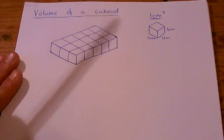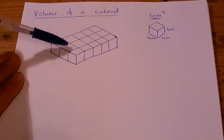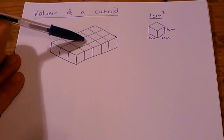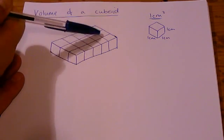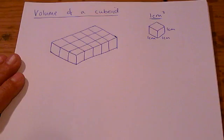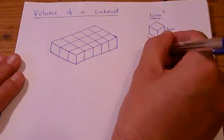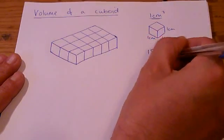Well we can do it simply by counting the cubes. We can go 1, 2, 3, 4, 5, 6, 7, 8, 9, 10, 11, 12, 13, 14, 15. 15 centimetres cubed is the volume of that.